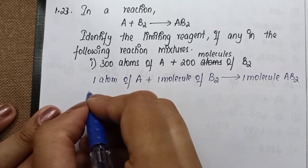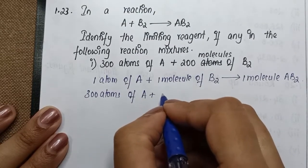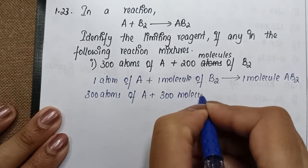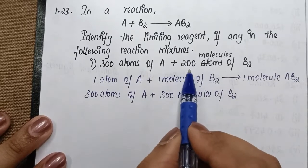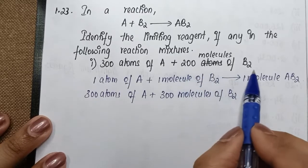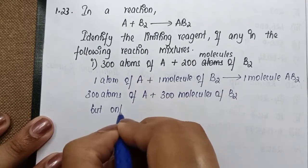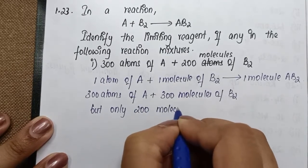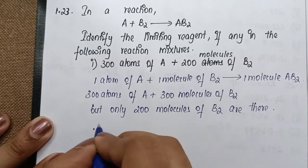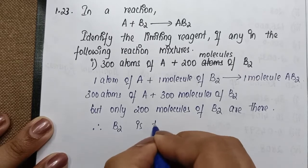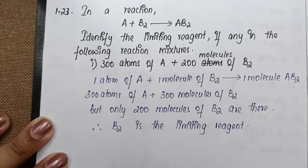Using the equation, 300 atoms of A would require 300 molecules of B₂. But the data given only provides 200 molecules of B₂. Since only 200 molecules of B₂ are available, which is less than the 300 required, B₂ is the limiting reagent for this first condition.